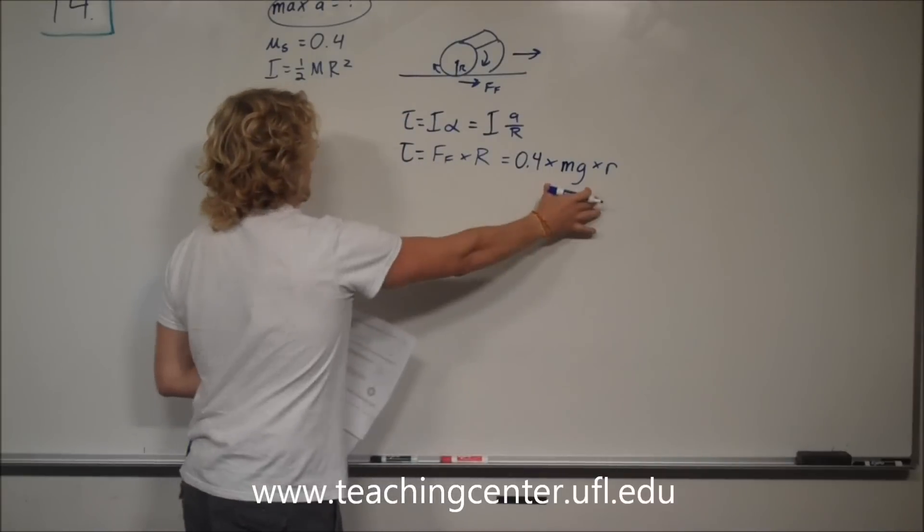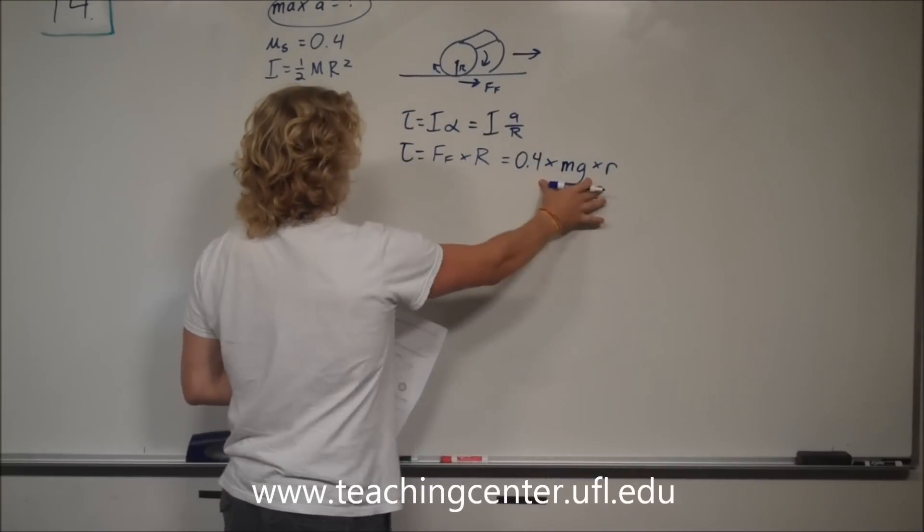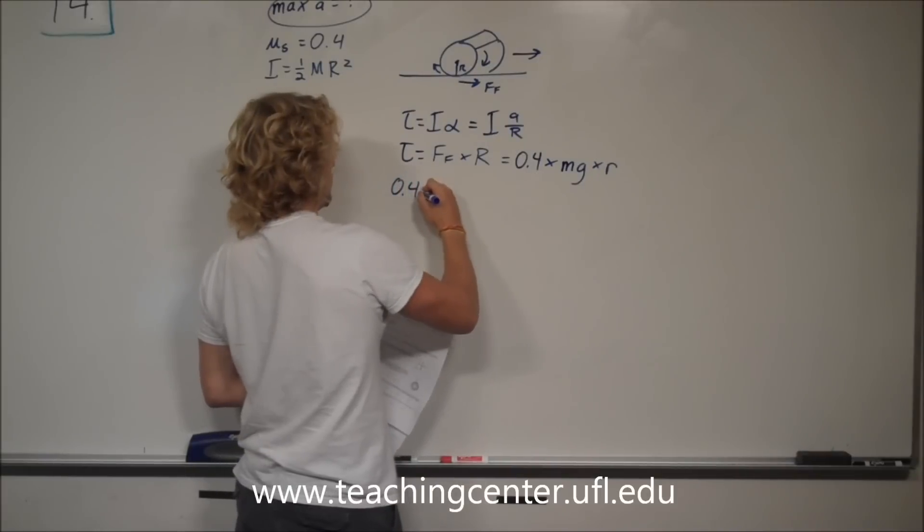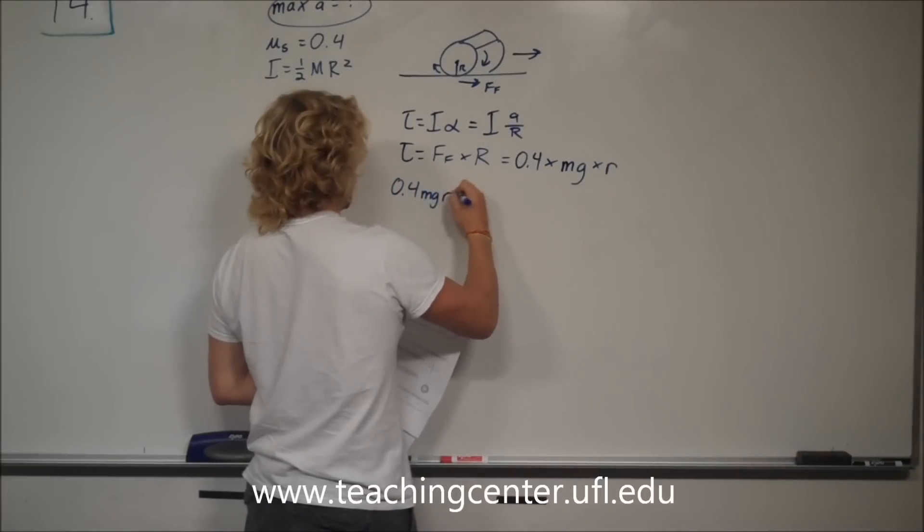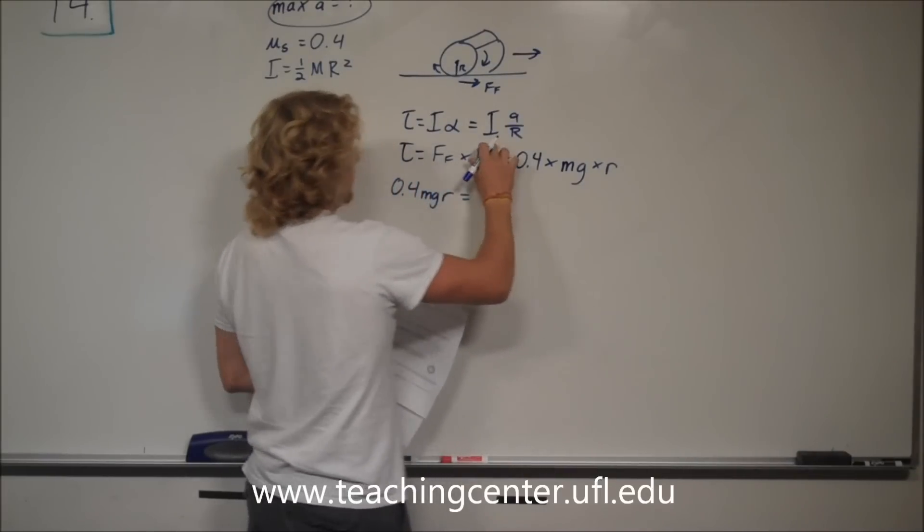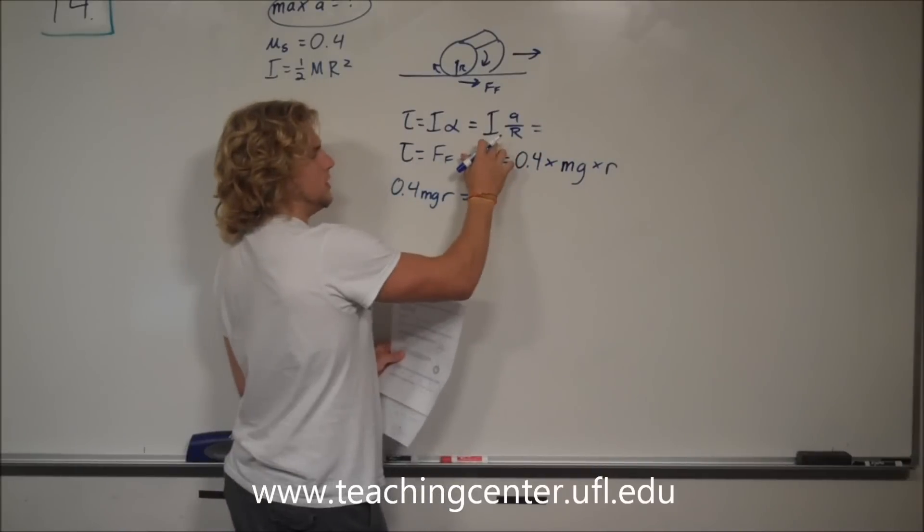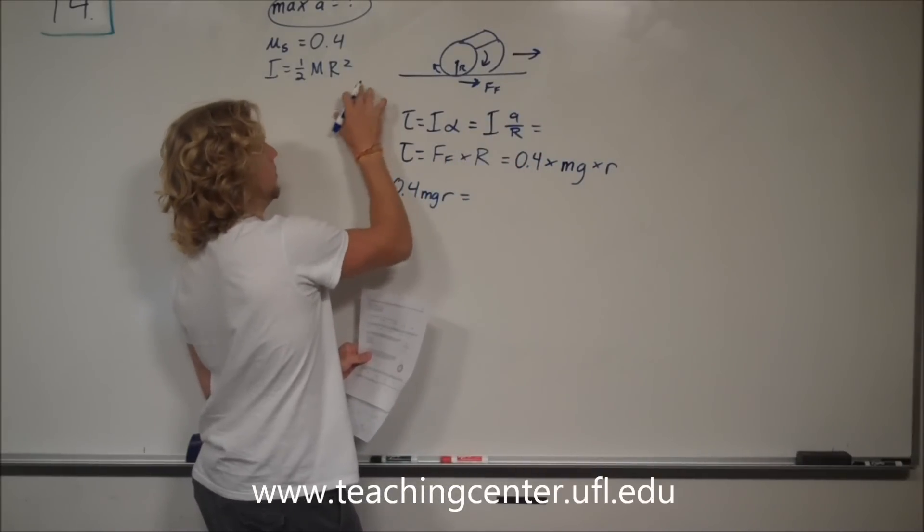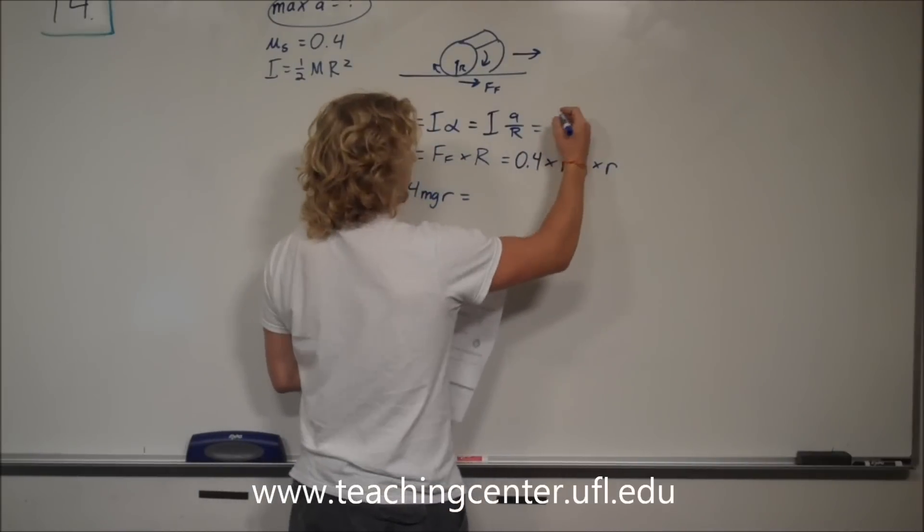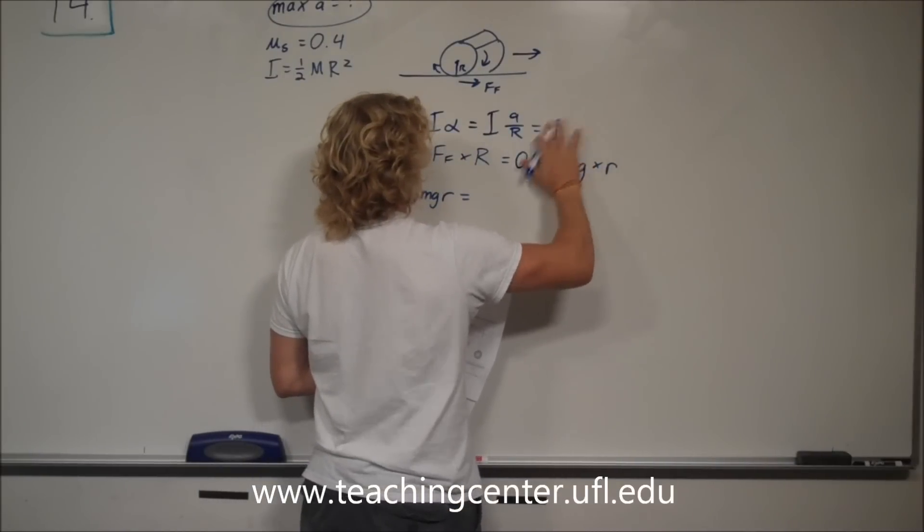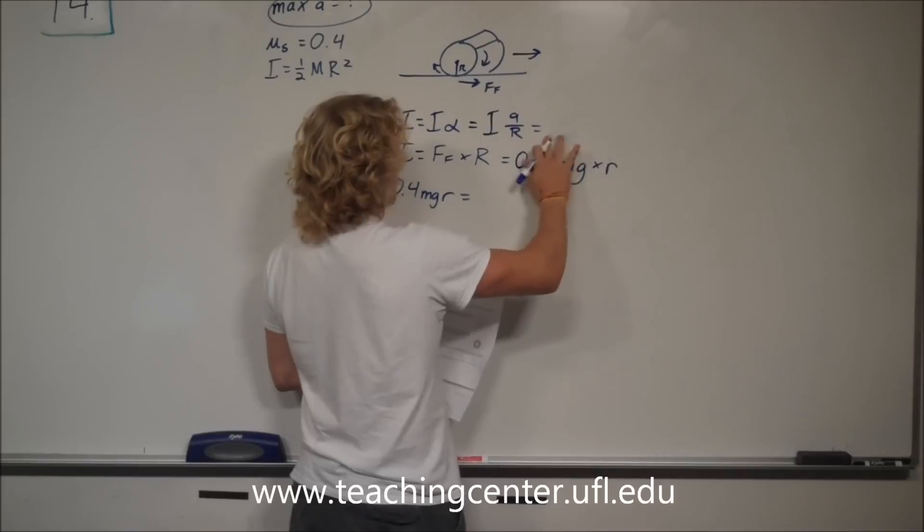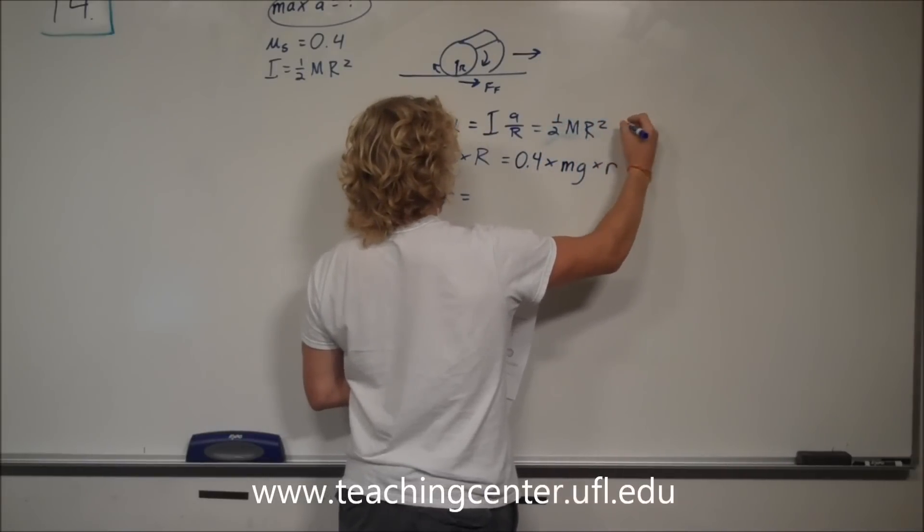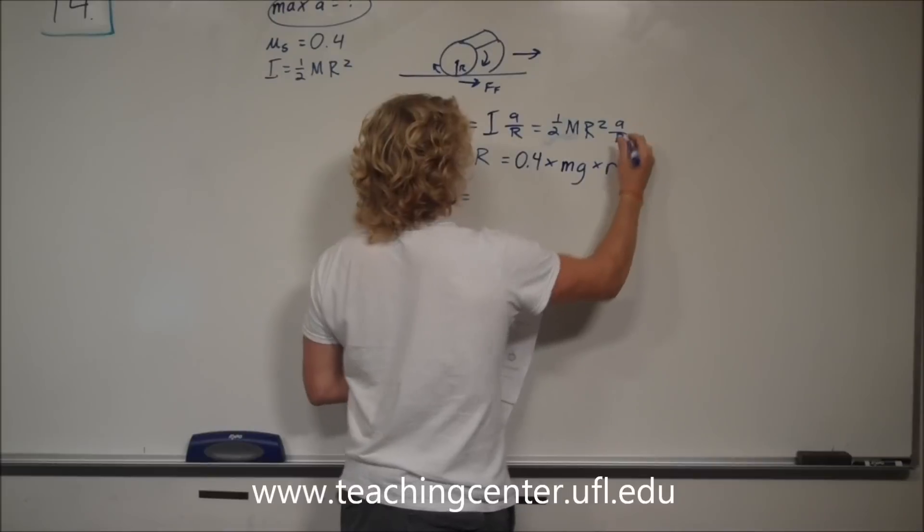times R. So, now we have this times this, or this is equal to this. 0.4mgr is equal to, let's go ahead and change this from inertia. Inertia is equal to one half mr squared. So, let's change that up.